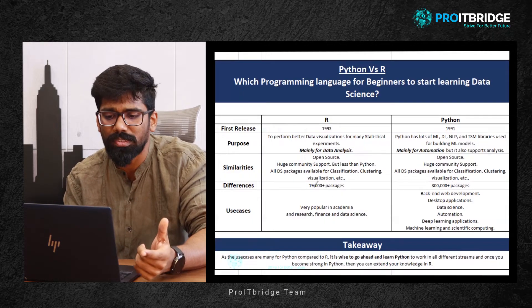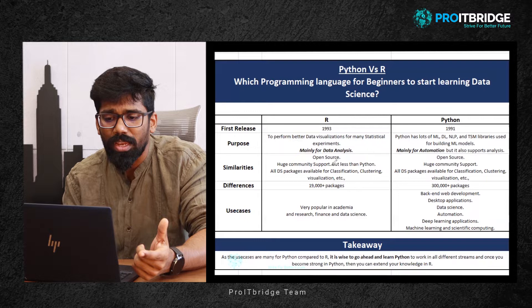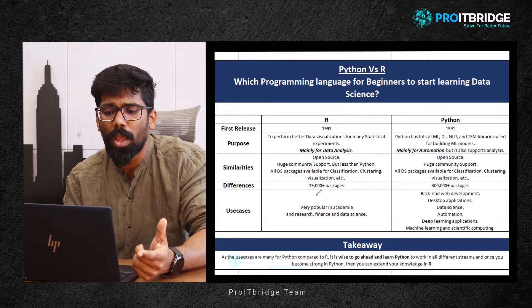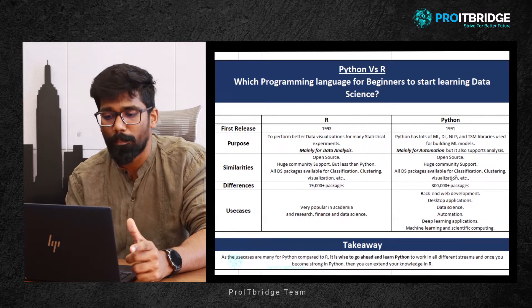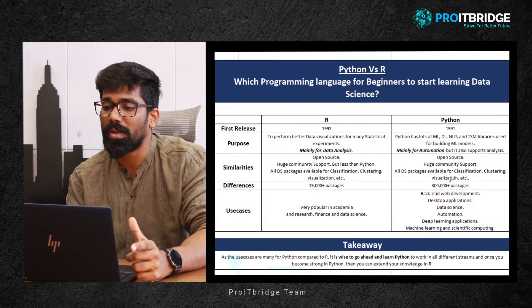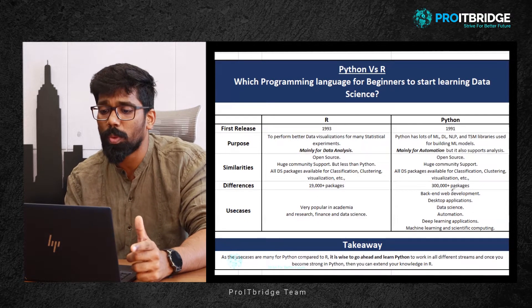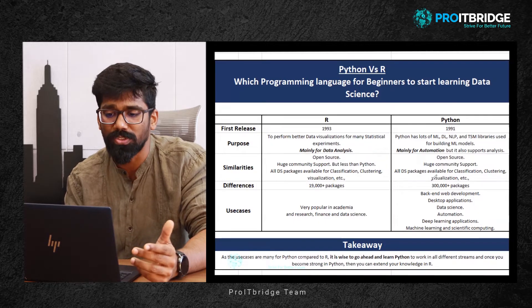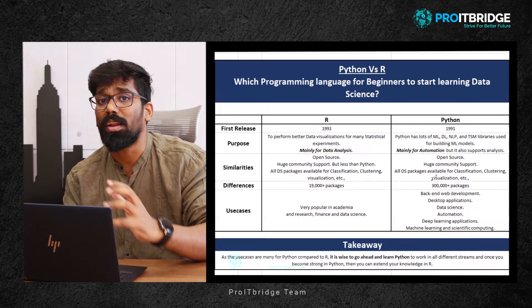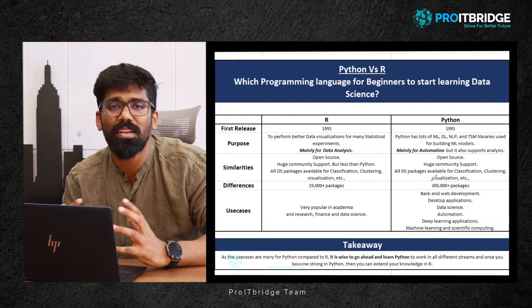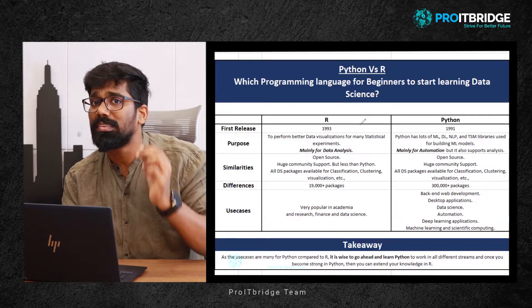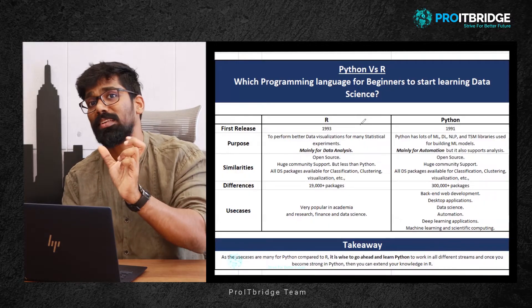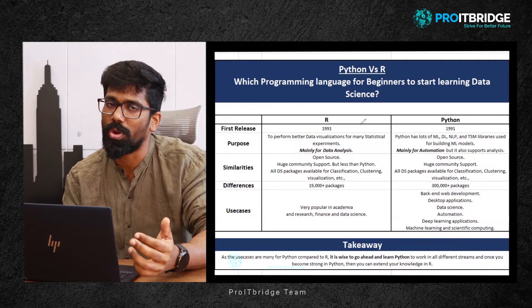In R programming language, we have 19,000 plus packages, but in Python programming, we have 300,000 plus packages. So the number of packages itself is very different — R has less and Python has more.